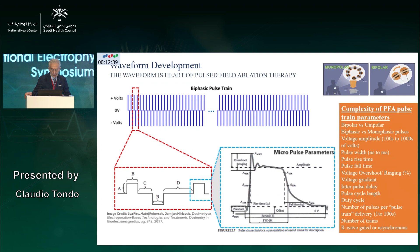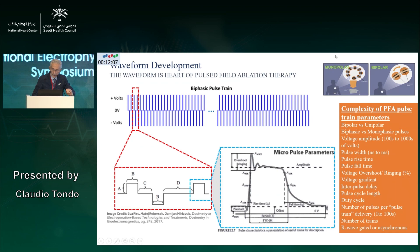Much time has been spent figuring out the best modality to apply electroporation. Currently, electroporation is applied using a biphasic pulse train, which determines the best electroporation effect on atrial tissue. You also have the option of monopolar or bipolar delivery, depending on catheter configuration. Different companies offer different modalities, but basically every PFA catheter uses a biphasic pulse train.